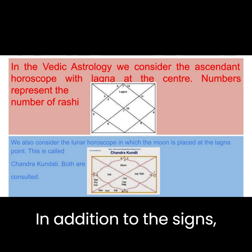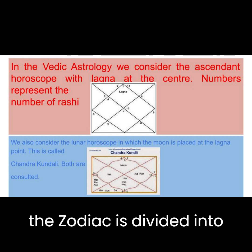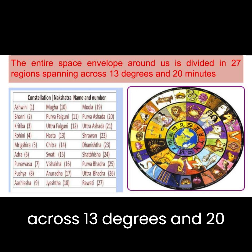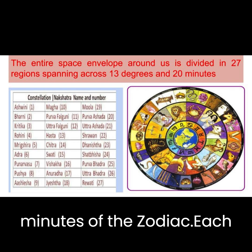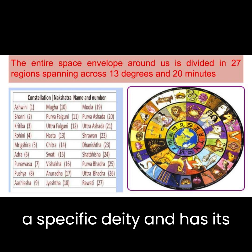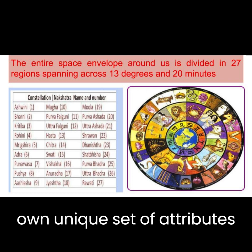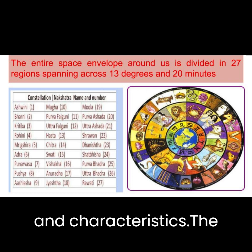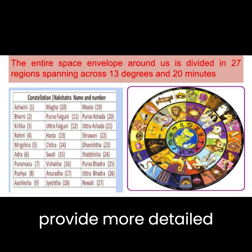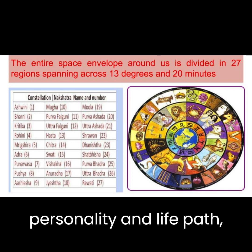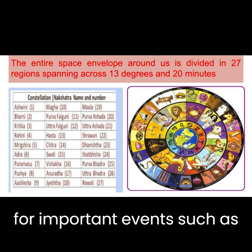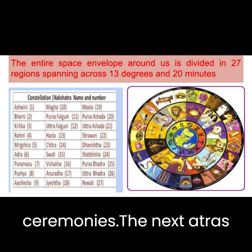In addition to the signs, the zodiac is divided into twenty-seven regions called nakshatras, each spanning across thirteen degrees and twenty minutes of the zodiac. Each nakshatra is associated with a specific deity and has its own unique set of attributes and characteristics. The nakshatras are often used to provide more detailed insight into a person's personality and life path, and are also used to determine auspicious times for important events such as weddings and religious ceremonies.